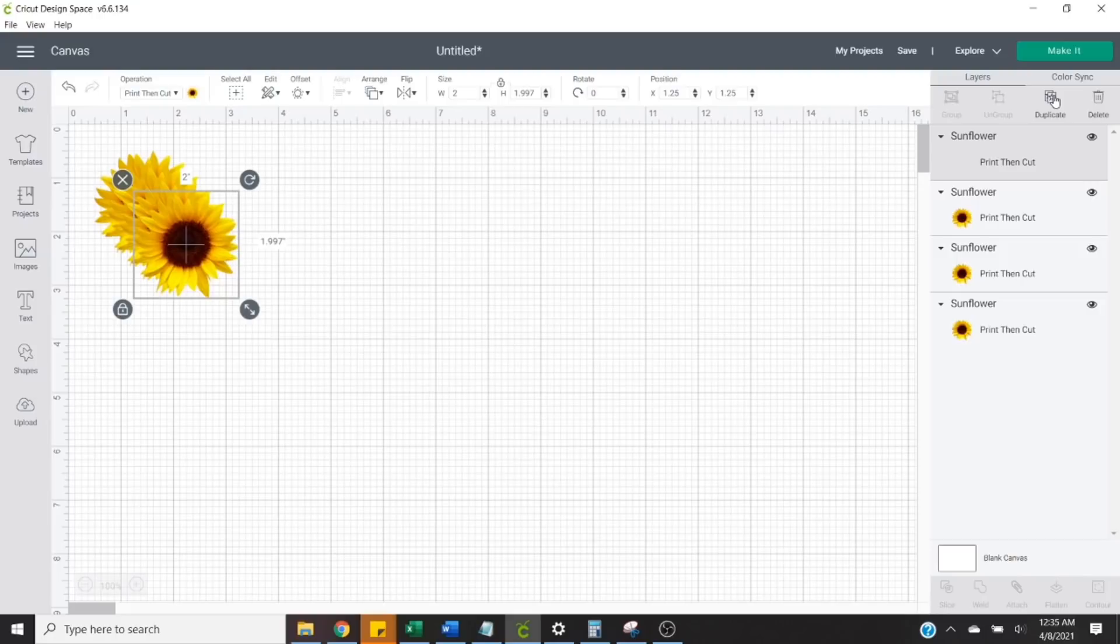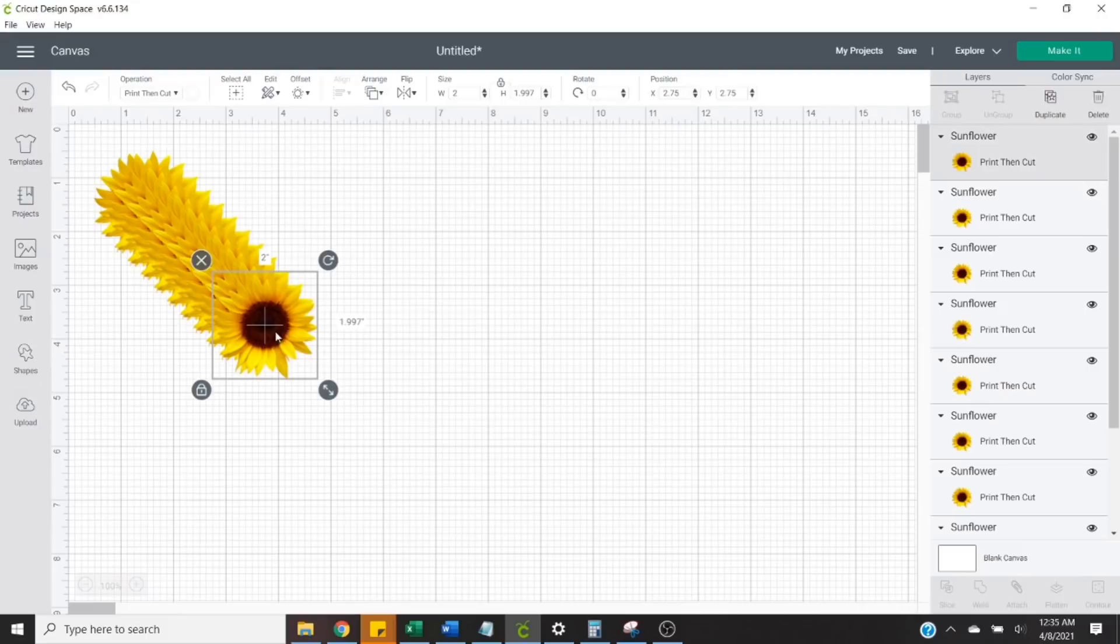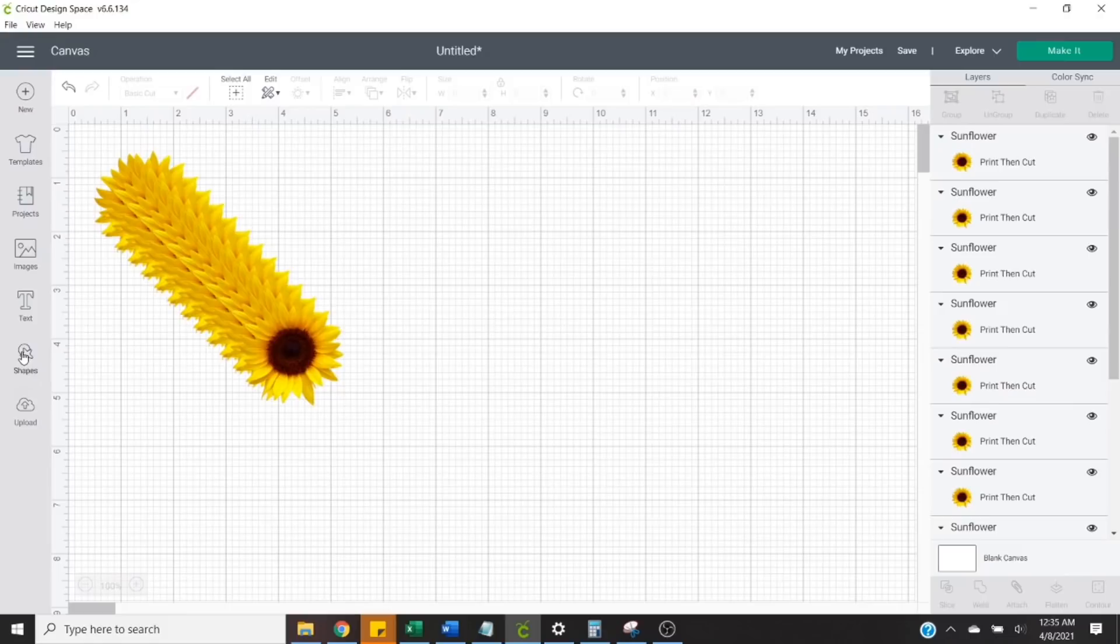We're going to use the print and cut feature on our Cricut today. I've done a more in-depth video on how to use printable vinyl and print and cut for your tumblers. I will link that original tutorial down below. I'm going to duplicate our sunflower so that I end up printing about 12 of these sunflowers.